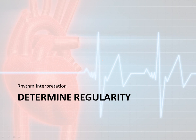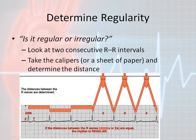Now let's move on from the heart rate calculation and actually determine the regularity itself. Whenever we talk about regularity, first you want to figure out: is it regular or is it irregular? You want to look at two consecutive R-to-R intervals. You're going to take your calipers or a sheet of paper and determine the distance itself.